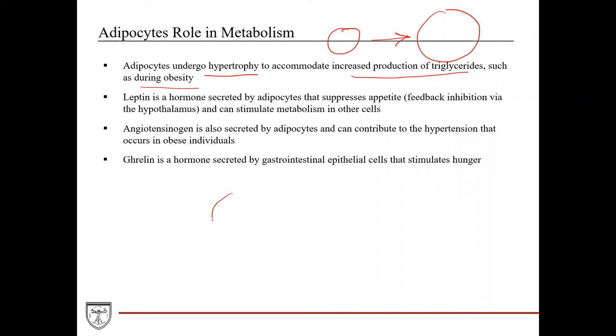Adipocytes also secrete a few hormones. One hormone they secrete is called leptin, and leptin actually suppresses the appetite.